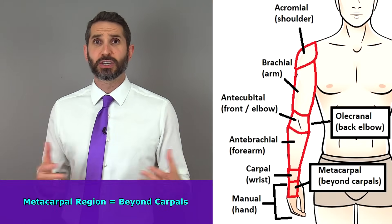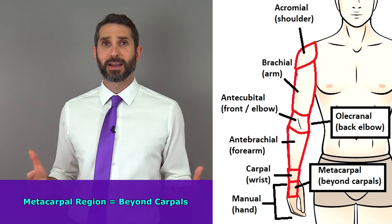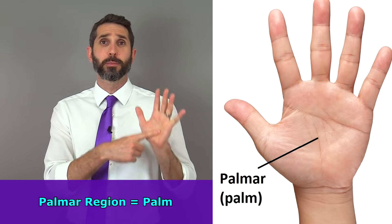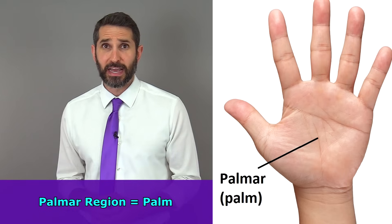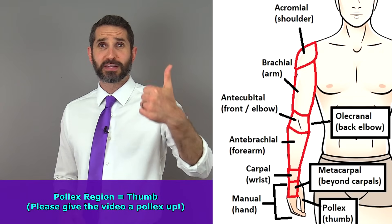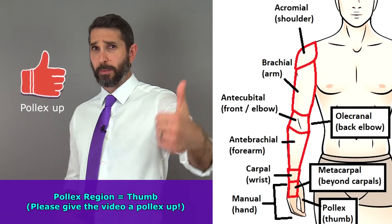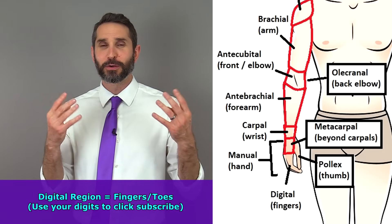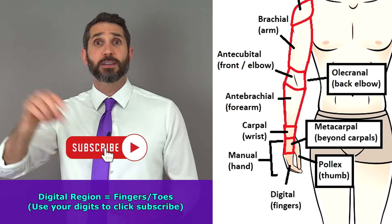The metacarpal region is just beyond the carpals — the prefix 'meta' means beyond. Your palm is also referred to as the palmar region, and you should never miss that one on a test because it literally has the word 'palm' in it. The region of the thumb is referred to as the pollux region — so if you find this video helpful, give it a pollux up. The digital region refers to your fingers, which you can use right now to click that subscribe button.